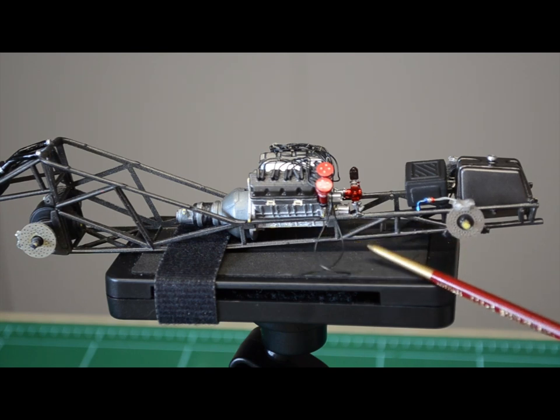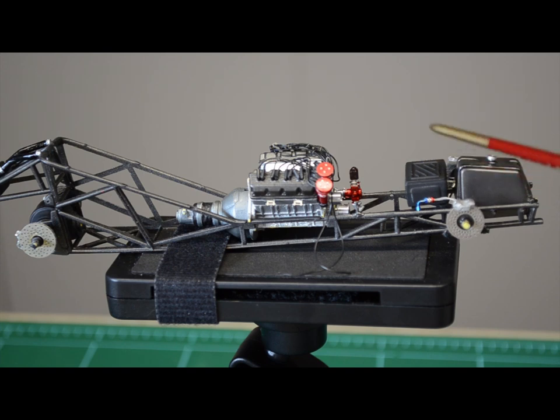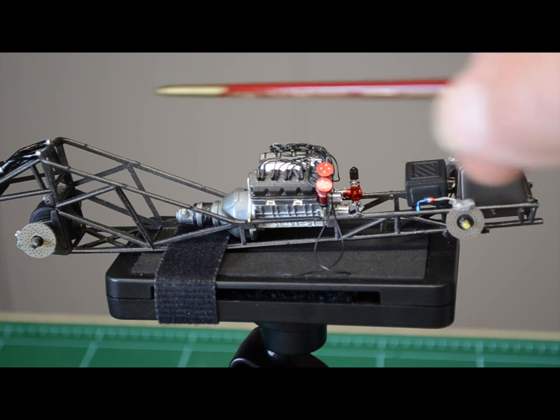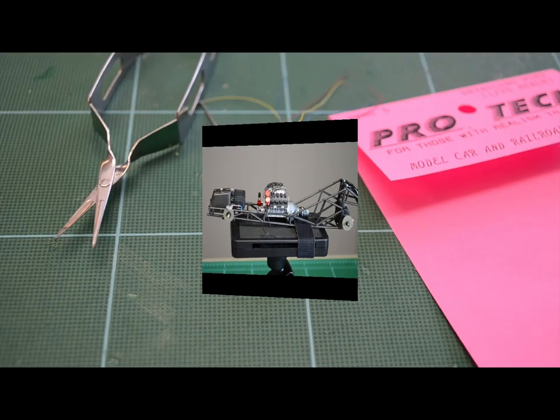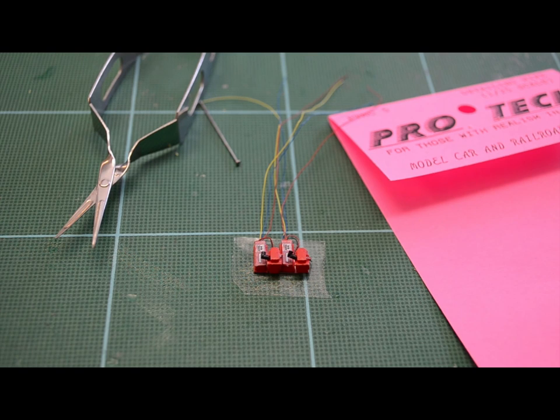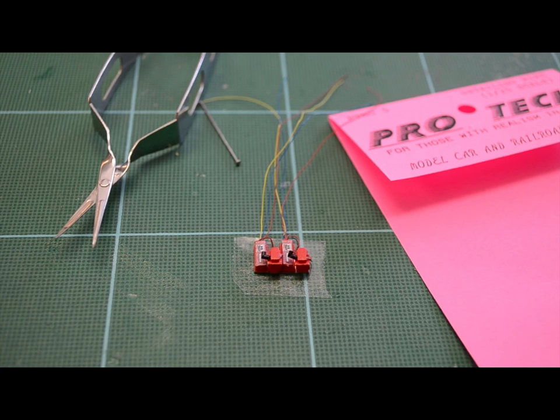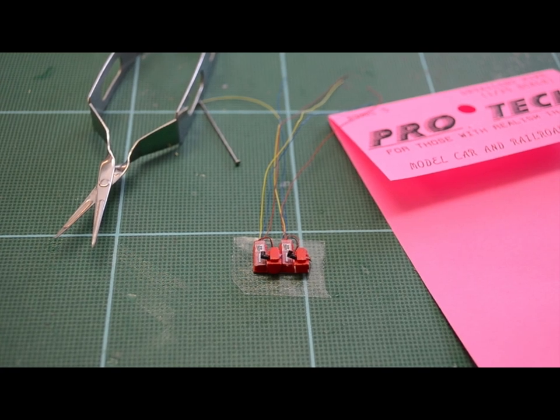And then of course we've got our coil wires coming down here that would connect to it. We've got wires going from those point boxes to the electronics box up front. We're going to have something going to a kill switch up in the cockpit also.